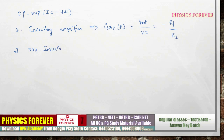For the non-inverting amplifier, we follow the same procedure: identify components, apply Kirchhoff's law, assume ideal op-amp conditions, substitute, and rearrange to find the gain. The gain for the non-inverting amplifier is: 1 + RF/R1, where RF is the feedback resistance and R1 is the internal resistance.